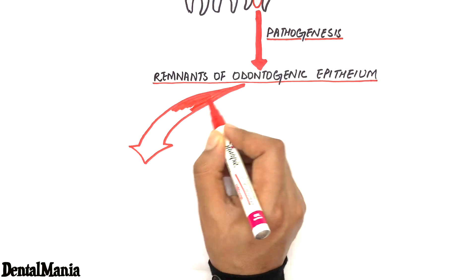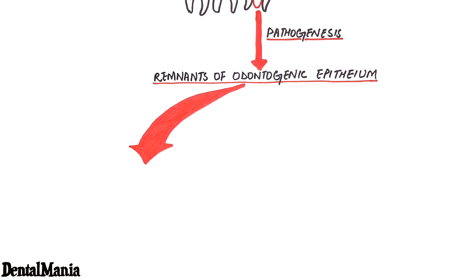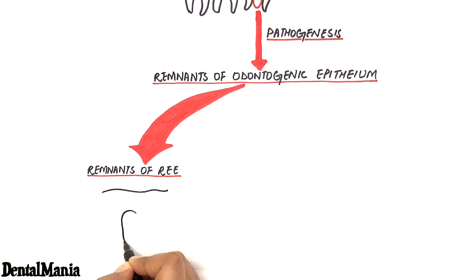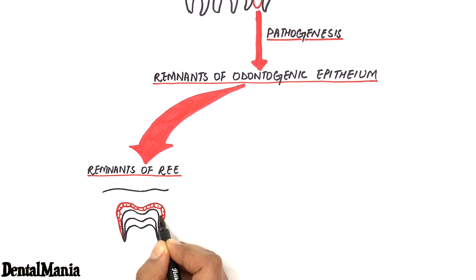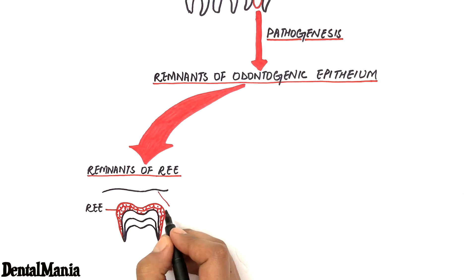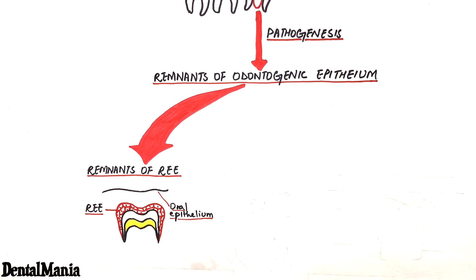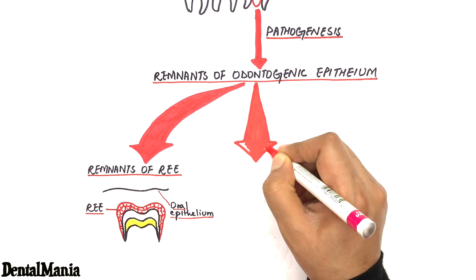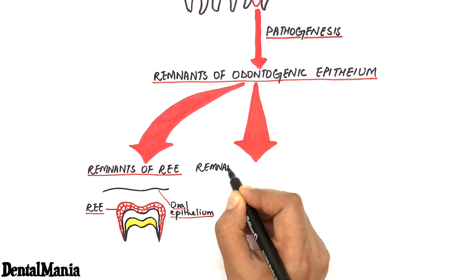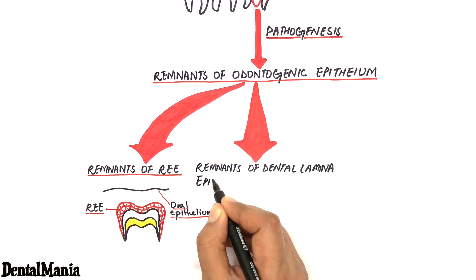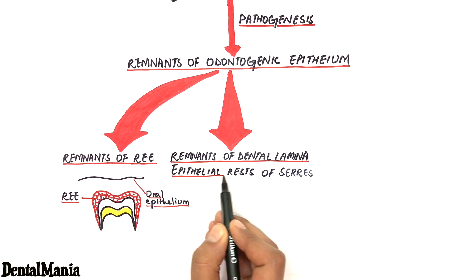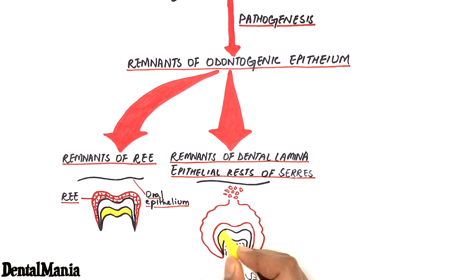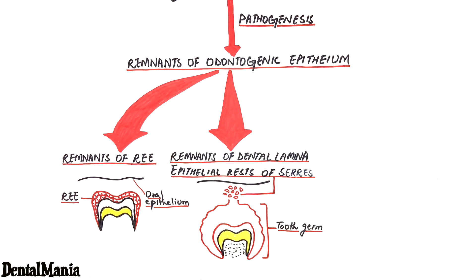The odontogenic epithelial remnants are listed as: remnants of reduced enamel epithelium, left after reduced enamel epithelium fuses with the oral epithelium and the tooth erupts into the oral cavity; and remnants of dental lamina, also called epithelial rests of Serres, which are left after dental lamina detaches from the tooth germ formed in the late bell stage of tooth formation.